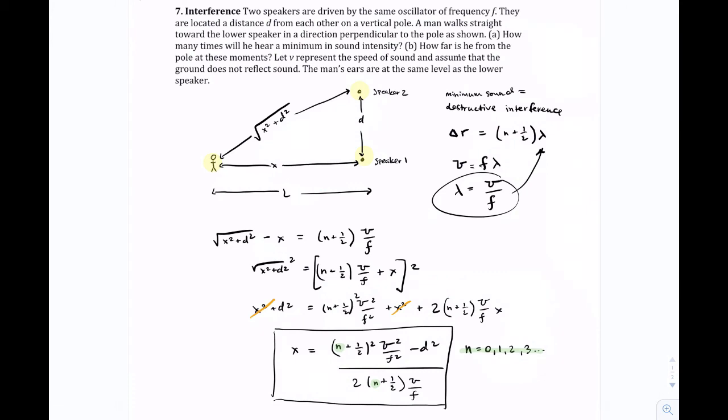your N equals zero actually gives you a pretty big value because you're also dividing by this larger number. And it helps if you actually do this with numbers, but what ends up happening is you get different values as you plug in N, and you just plug in N until your value no longer makes sense.